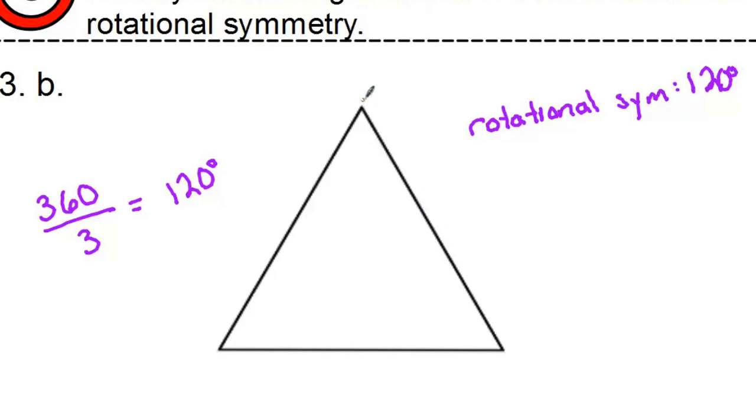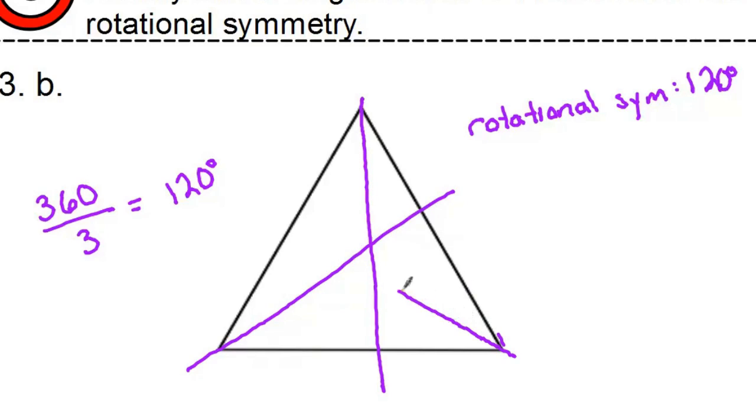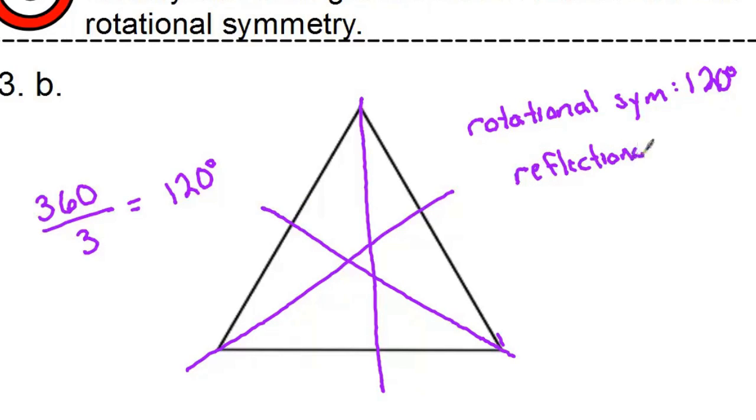Now if we want to talk reflectional symmetry, since it's equilateral, it's definitely got the one down the middle. It's also got the one down each of the other middles, because remember all the sides are the same length. So for reflectional, you should have three lines.